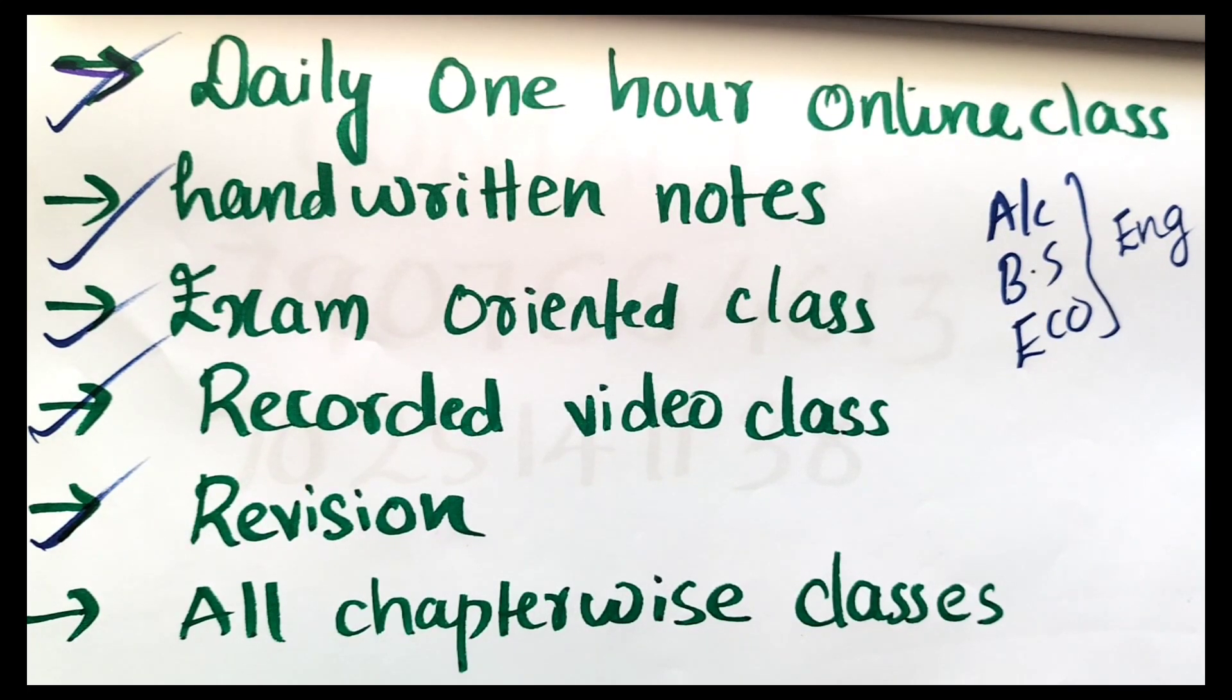There are 4 chapters in economics. That is the important chapter. Accountancy is two chapters. We have two important problems. Then Business Studies are six chapters. Then English is one of the things we have done.